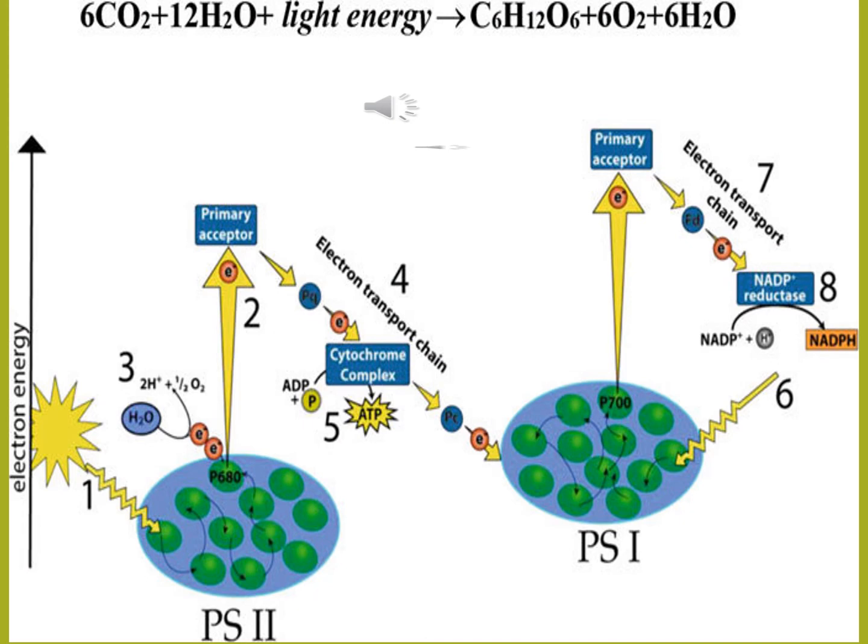Here is the diagrammatic representation of the mechanism of light reaction. The points are mentioned 1 through 8. In the first point, light strikes on the chlorophyll molecule. In the second point, electrons get excited and move toward the electron transport chain. The third one is light hydrolysis of water, in which two protons fill the holes of the chlorophyll molecule. The fifth one is that ATP is formed.